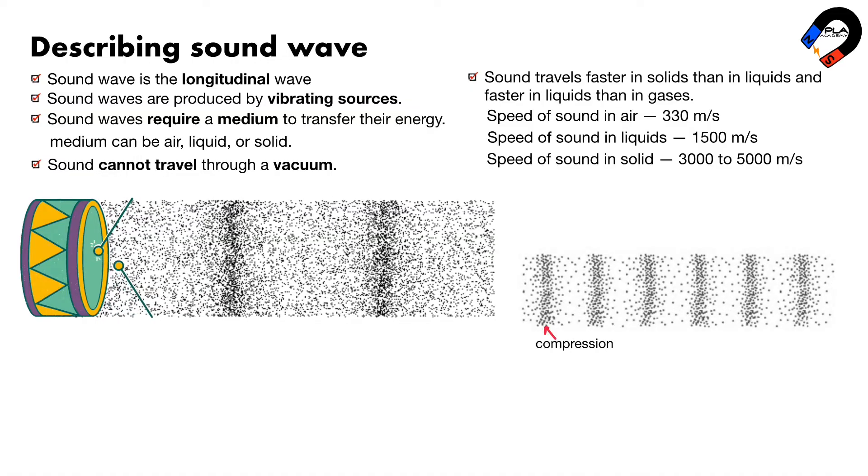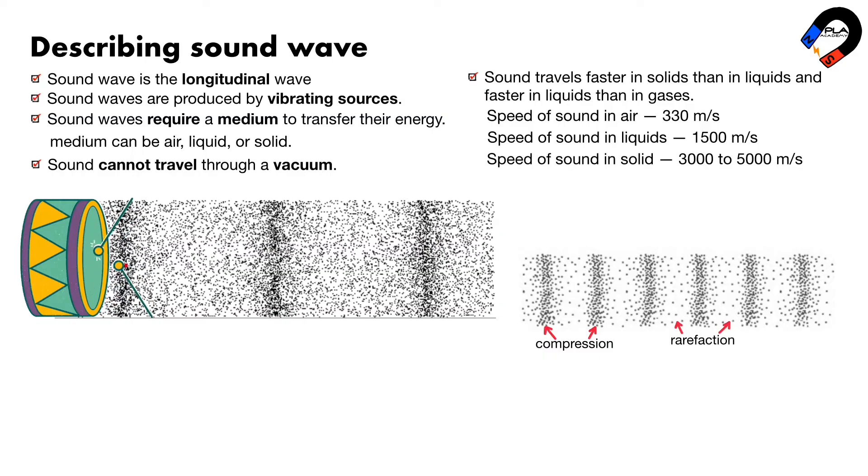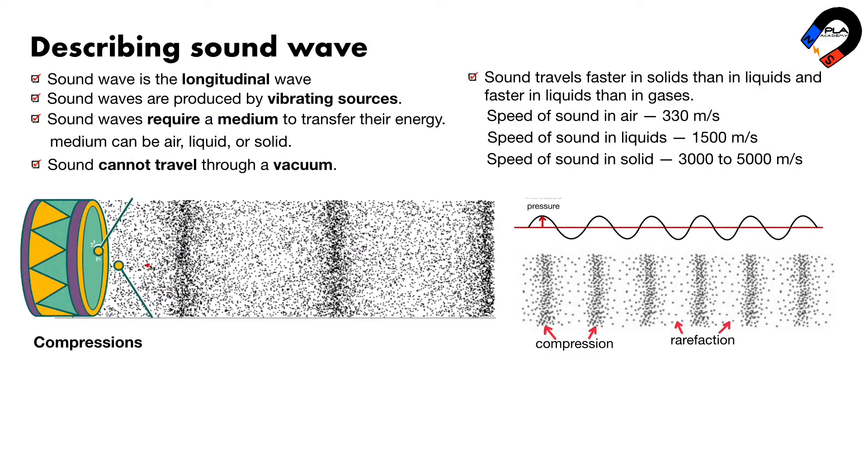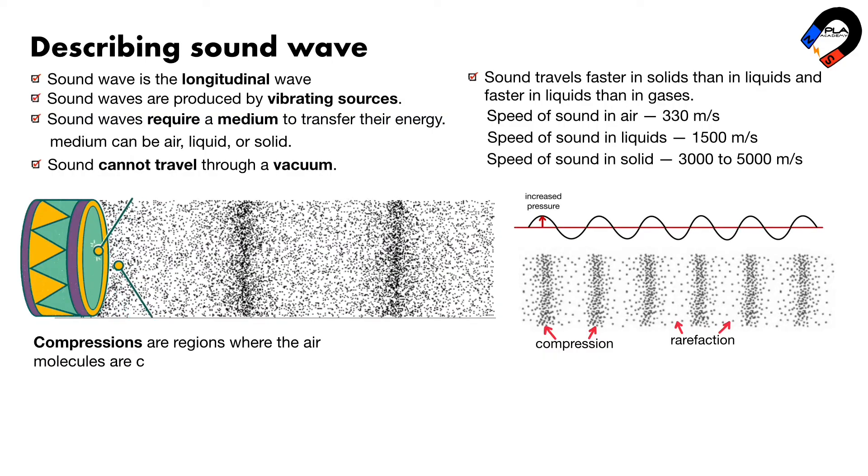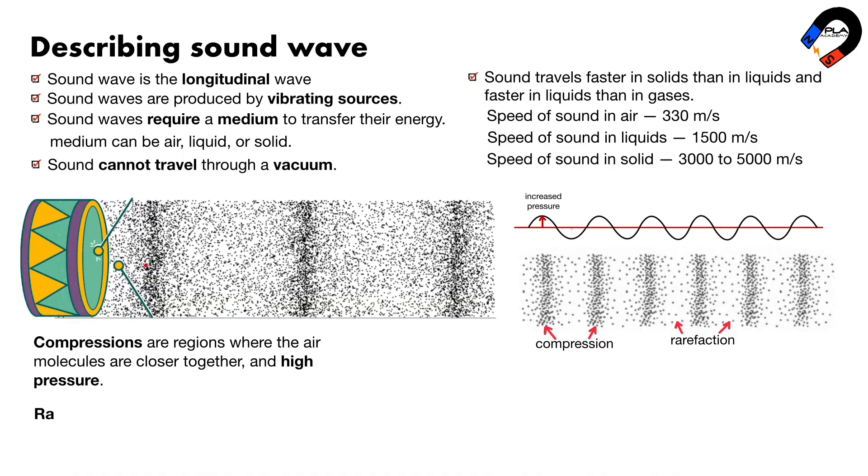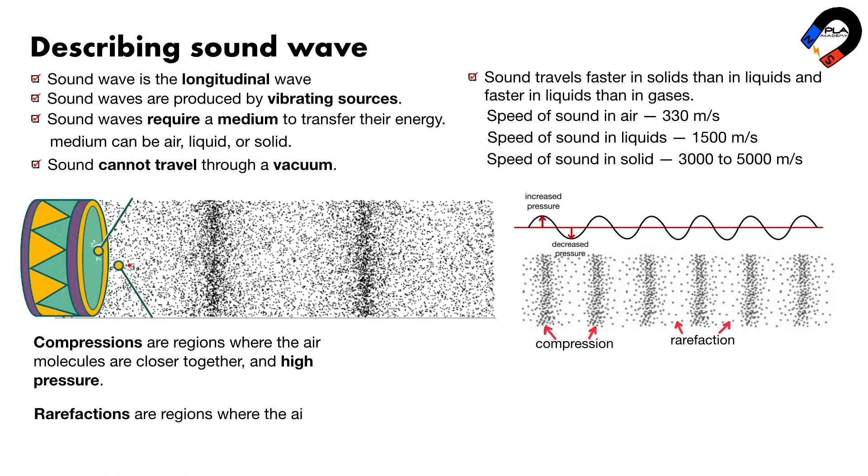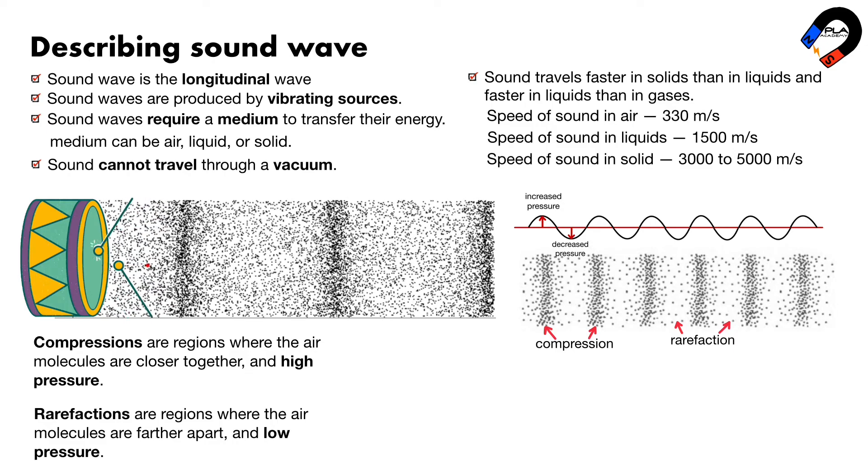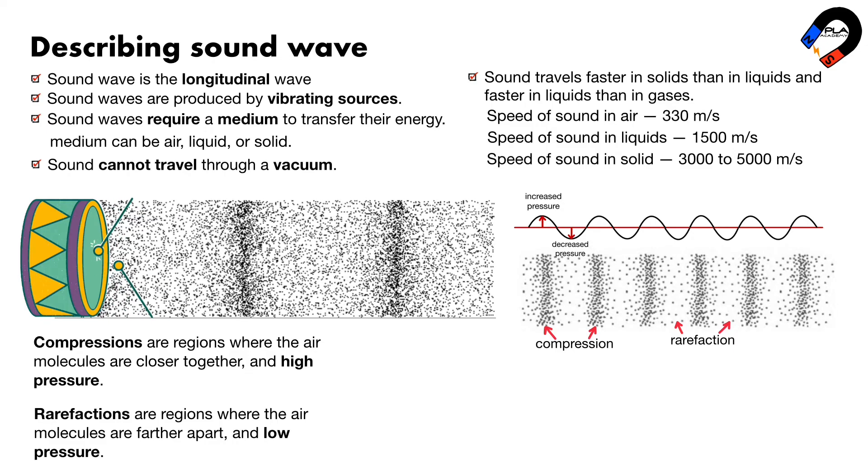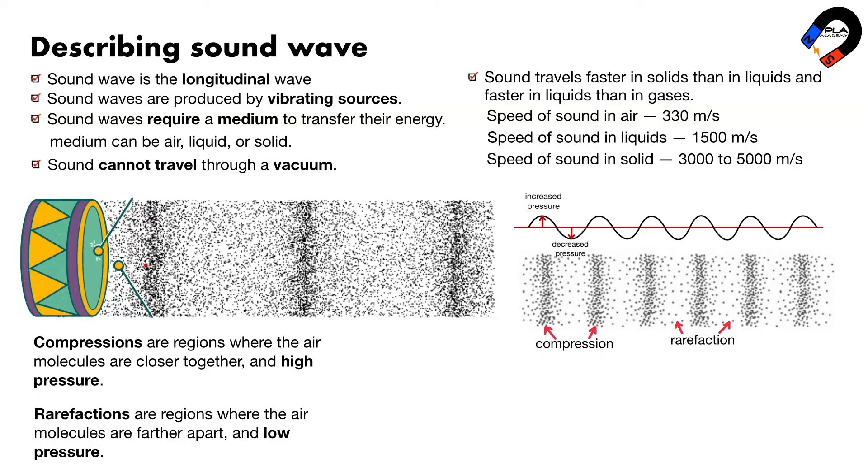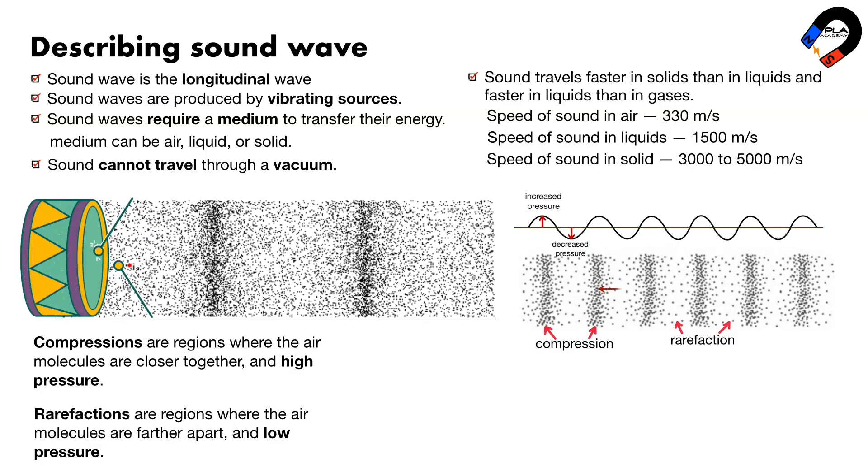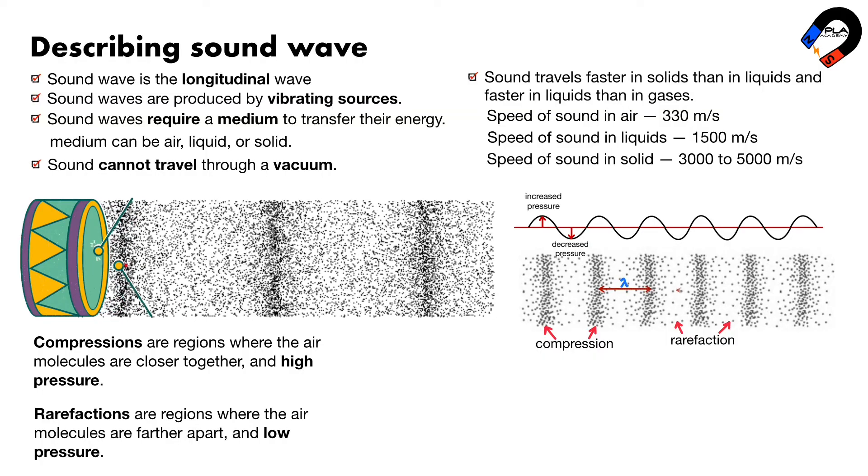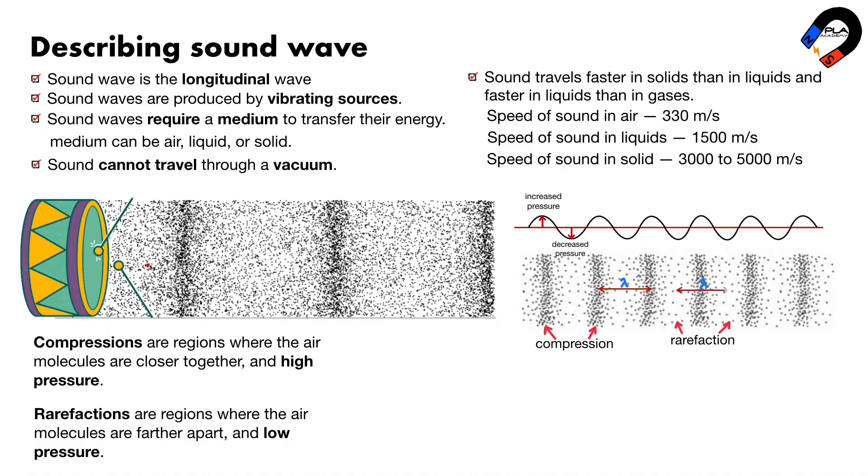This creates a series of compressions and rarefactions in the air. The compressions are regions where the air molecules are closer together, and high pressure. The rarefactions are regions where the air molecules are farther apart, and low pressure. The compressions and rarefactions travel through the air as sound waves. The distance between the consecutive compressions, or consecutive rarefactions, is the wavelength.